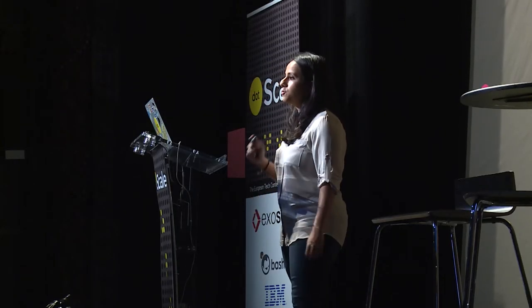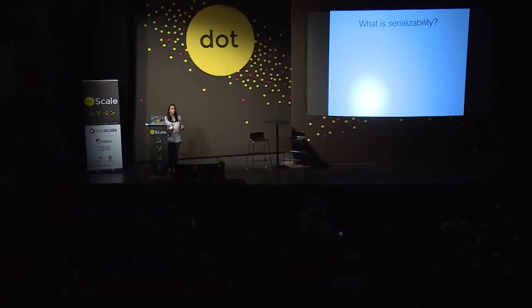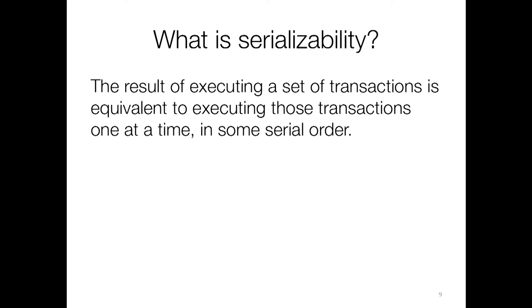A lot of very popular open source databases implement these semantics — for example, Postgres and MySQL. When we think about what consistency really means in a database, we're usually talking about those top three things. One form of strong consistency in a database with transactions is called serializability. Serializability is a property about a schedule of transactions: the result of executing a set of transactions is equivalent to executing those transactions one at a time in some serial order. What this means is that the database and the return values from those transactions match some serial ordering.